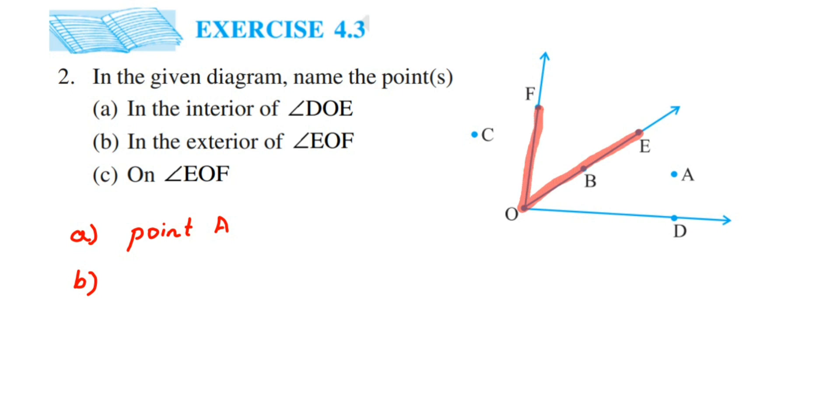Exterior means outside this angle, so it is covering all this region. In all this region, you can see there's point A, point D, and point C. So it will be points A, D, and C.